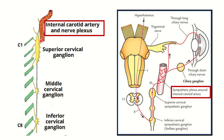Here we can see the internal carotid artery in the first picture, and in the second picture we can also see the internal carotid artery encircling a structure — which is a sympathetic plexus arising from the superior cervical ganglion. From the superior cervical ganglion, the sympathetic plexus arises and wraps the internal carotid artery, going to the upper part of the body. In the second picture we can see the internal carotid artery and the sympathetic plexus.